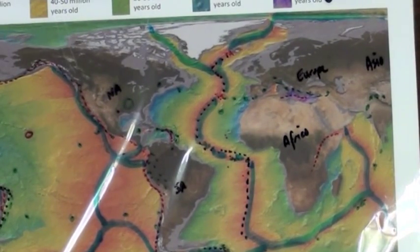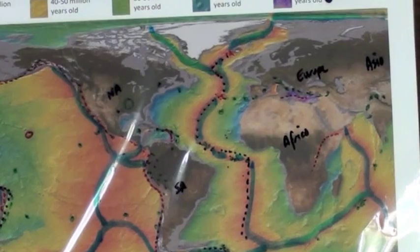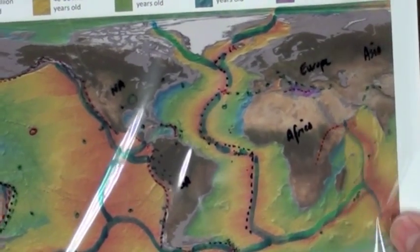Alright. So where does this leave us? Well, we're developing a pretty clear map of the plate boundaries on the planet. Let's look at one last data set, magnetic patterns.